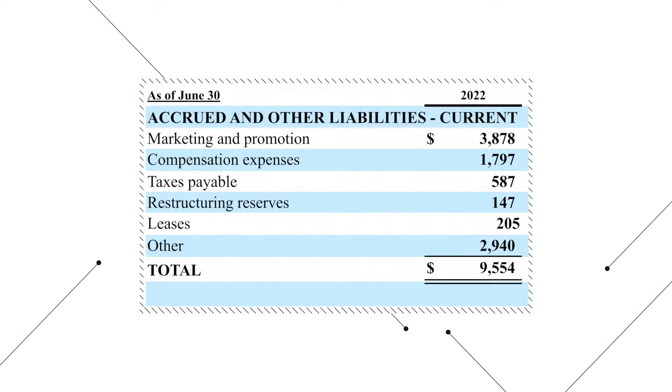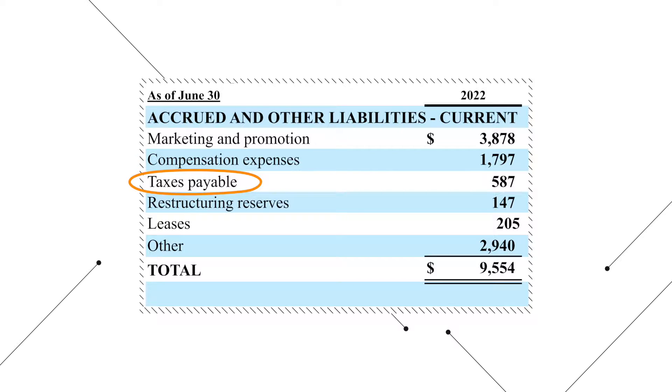Now, every company is different. So if you see accrued liabilities listed on the balance sheet, you need to go to the notes to the financial statements to see what's been included. For example, here are the six things that Procter & Gamble included in its accrued liabilities. You can see that Procter & Gamble included some of the things we talked about, such as compensation payable and income taxes payable, as well as some other items.